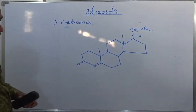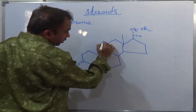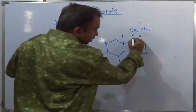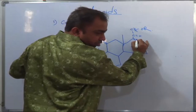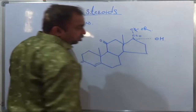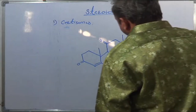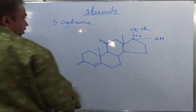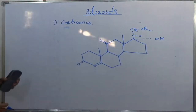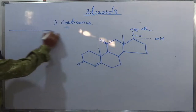Cortisone — I have said it has delta-4, 3,20-diketone. At the 11th position, there is an oxygen back. We are adding an OH group at the 17th position. If R is H, then this is cortisone. If R is COCH3, then this is cortisone acetate. Write down this structure and this table.